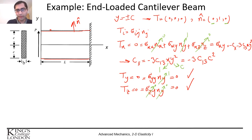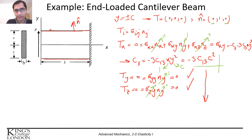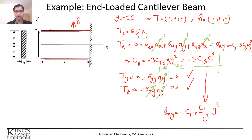Substituting c_11 = minus 3 c_13 c^2 into the expression for sigma_xy, it results that sigma_xy = minus c_11 plus c_11 divided by c^2 times y^2. We still have c_11 to determine, so we need another boundary condition.